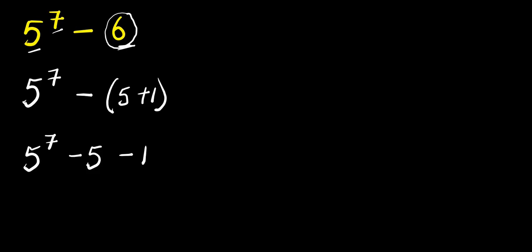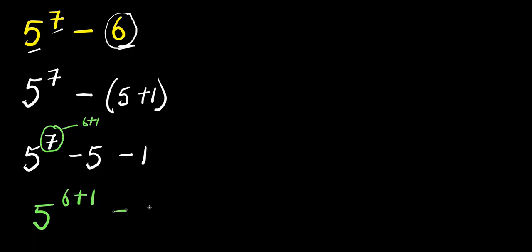The next step is to consider this exponent, which is 7, and we are going to express it as the summation of 6 and 1. So we replace it to get 5 to the power of 6 plus 1, minus 5, minus 1.